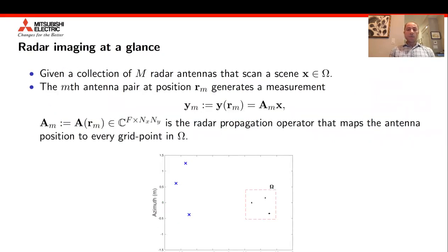To formalize the problem, let's assume that we are given a set of M radar antennas, and we are attempting to reconstruct an image of the scene, which we'll label by X, and X is located inside of the domain omega. If we consider an individual antenna pair, transmitter-receiver pair, indexed by M, then the set of measurements for the Mth antenna pair are represented by Y_M, which equals the linear radar operator A_M that multiplies the radar image X. That linear operator A_M is the radar propagation operator, and it depends on knowing the exact location of the transmitter and the receiver.